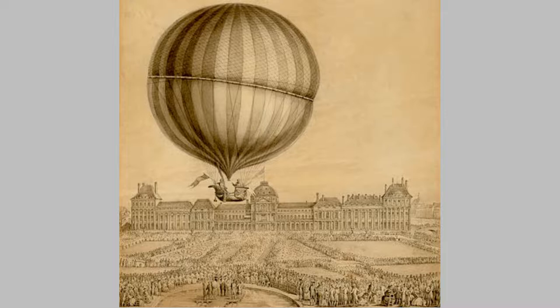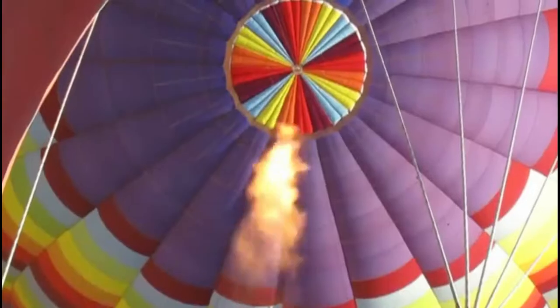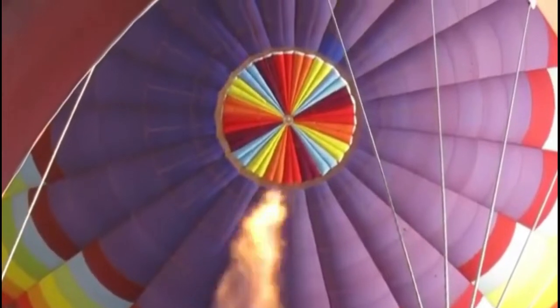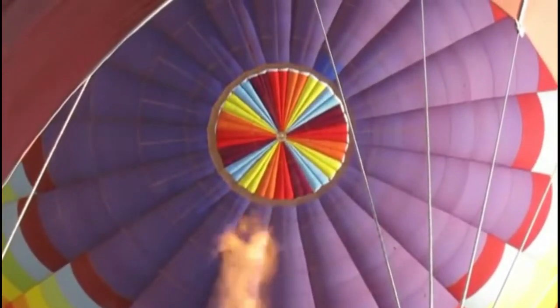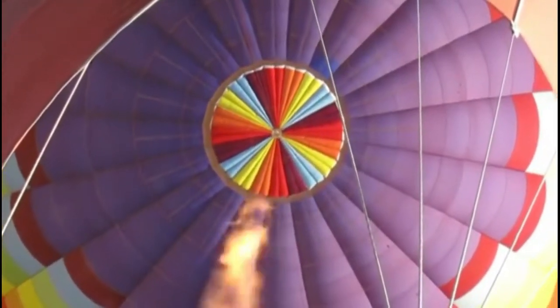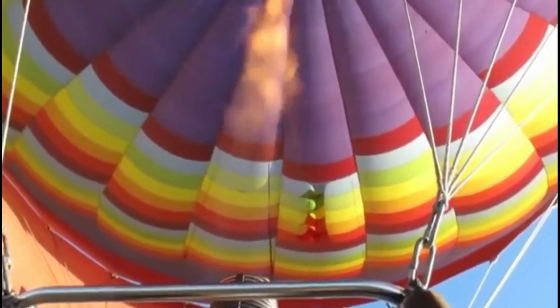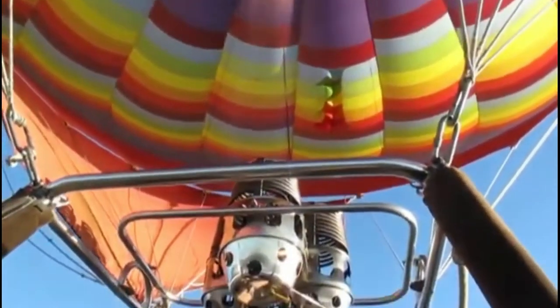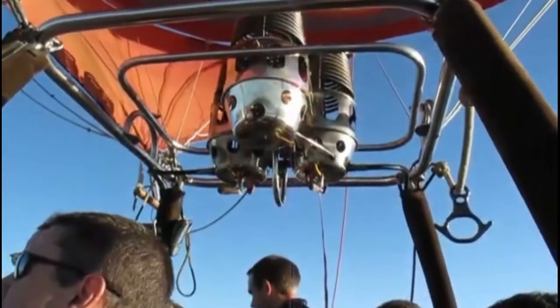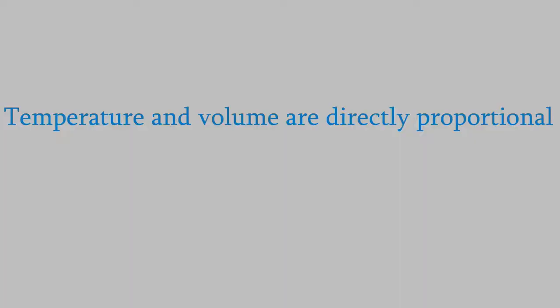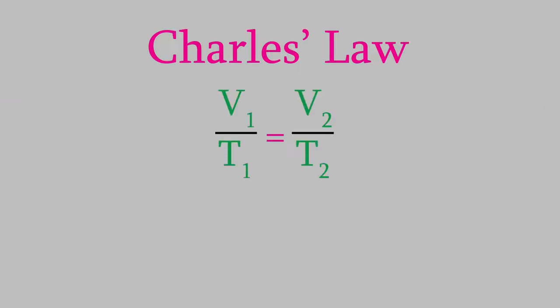As you might know, the air in a hot air balloon expands when we heat it with a flame. That reduces the density of the air inside, and that's what makes it float. Jacques Charles realized that this means there's a connection between a gas's temperature and its volume. It turns out that the volume and the temperature are directly proportional. That idea is known as Charles' Law, and we can express it with this equation. V1 over T1 equals V2 over T2.